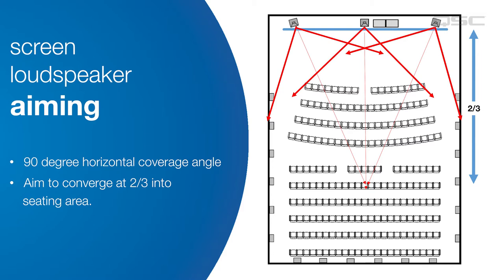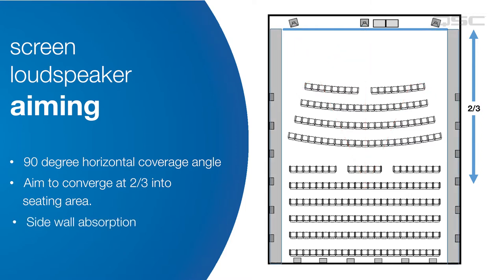Even with this aiming, a loudspeaker with a 90 degree horizontal coverage pattern will deliver a lot of energy to the sidewalls. So you can see why it's so important to treat sidewalls with acoustic absorption.